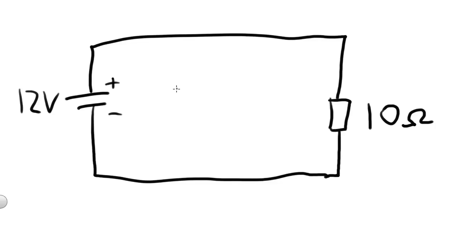Hi everyone, here's a very simple DC circuit. It has a 12-volt battery and a 10-ohm resistor. So to calculate current in this situation, we'd have to use Ohm's Law.